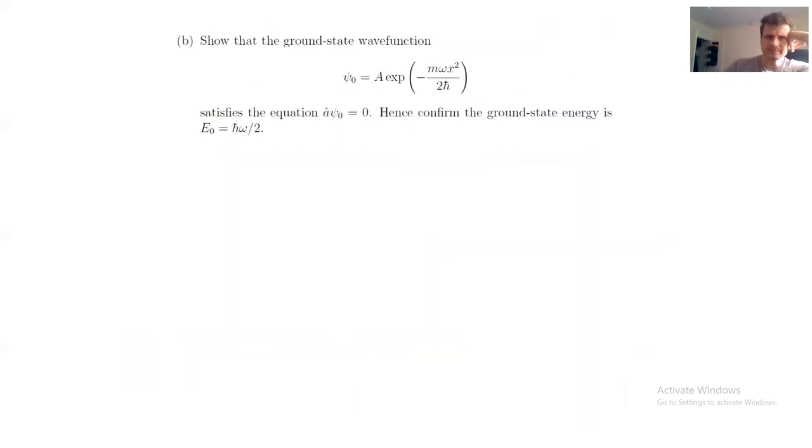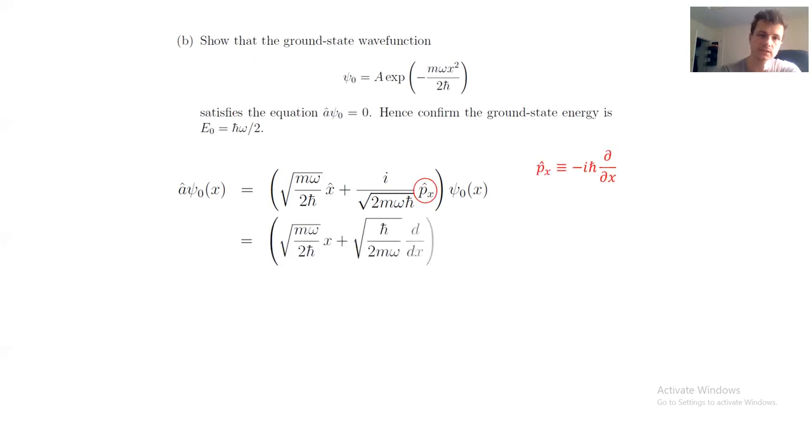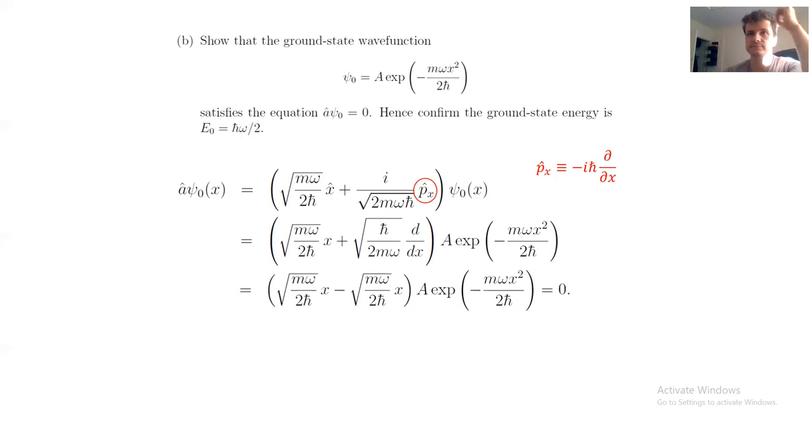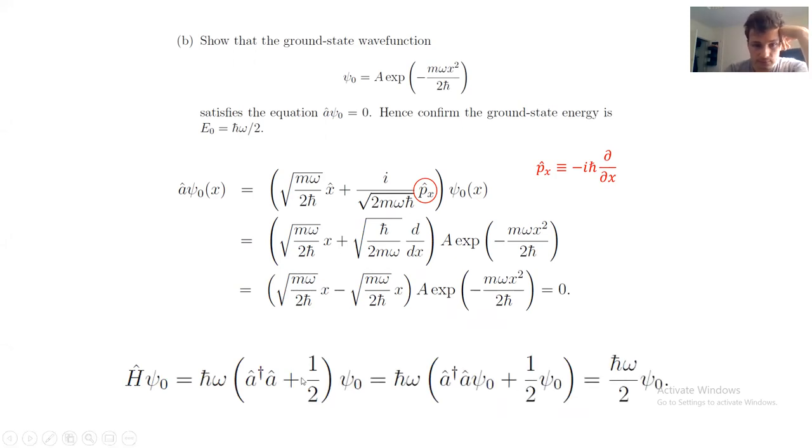Now, we are asked to compute the a dagger operator on the ground state. This is done very straightforwardly. You just need to apply the Hamiltonian on the wave function. We can actually see that if you apply the Hamiltonian on this, the first term is going to give you zero because the destruction operator is acting on the wave function. This is going to cancel. And the second term, this half is going to give you the actual eigenenergy of the ground state. Simple enough.